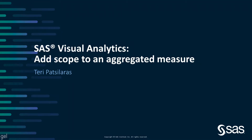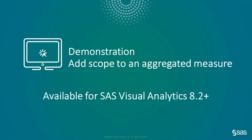In this video, I will walk through how to add a scope to an aggregated measure in SAS Visual Analytics. I will show how to build the expression and how to determine the intersections for the scope to be applied. I will also show how to use this scoped aggregated measure in other VA objects. I will be using SAS Visual Analytics 2021.1.6, but the same techniques can be used in earlier releases starting with SAS Visual Analytics 8.2 and later.